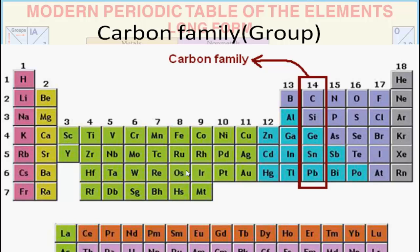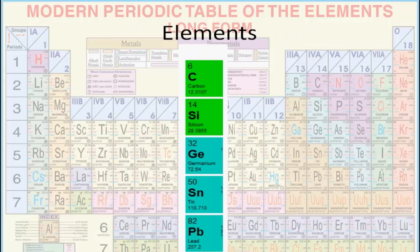Carbon family is the fourteenth group of the modern periodic table. You can see on the right side of the modern periodic table we can find the carbon family. We call it carbon family because carbon is the first element of this group. The elements present in this group are carbon, silicon, germanium, tin and lead.